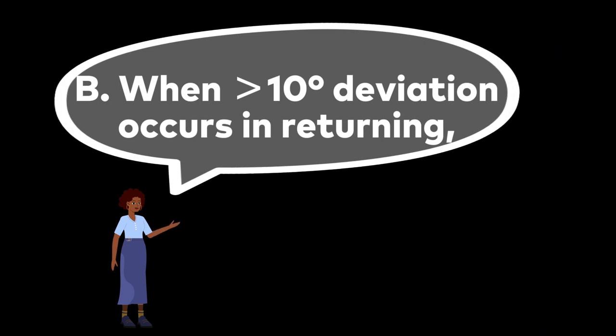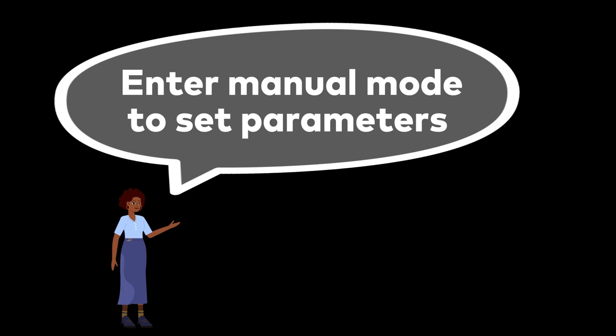b. When greater than 10 degrees deviation occurs in returning. Enter manual mode to set parameters.